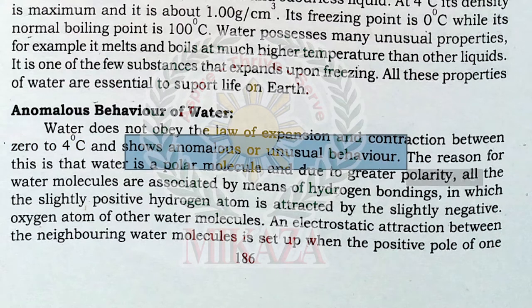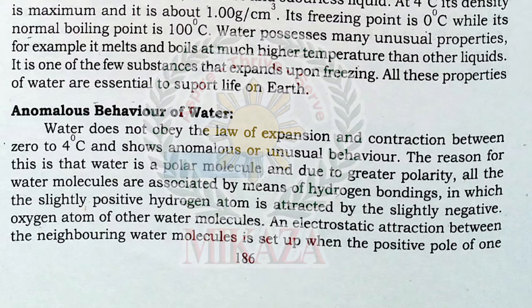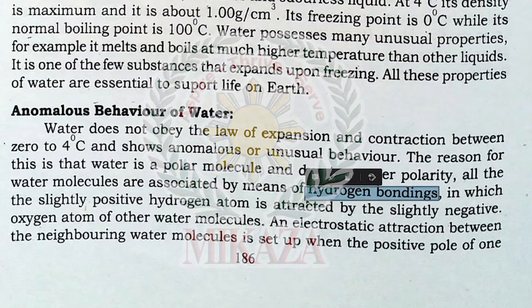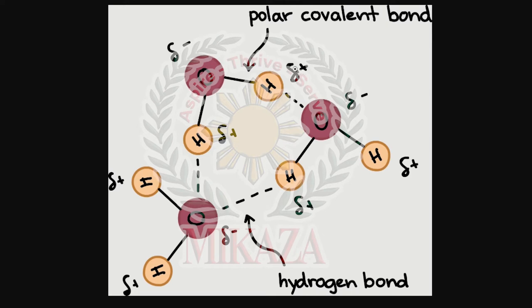The reason for this anomalous behavior is that water is a polar molecule. Due to its great polarity, all water molecules are associated by means of hydrogen bonding, in which the slightly positive hydrogen atom is attracted by the slightly negative oxygen atom of other water molecules. This anomalous behavior occurs between 0 and 4 degrees Celsius.